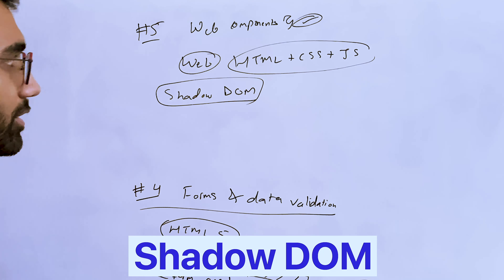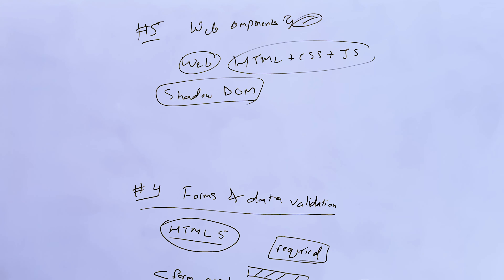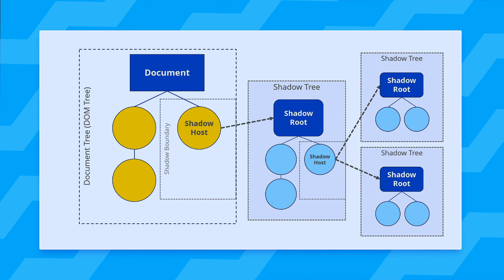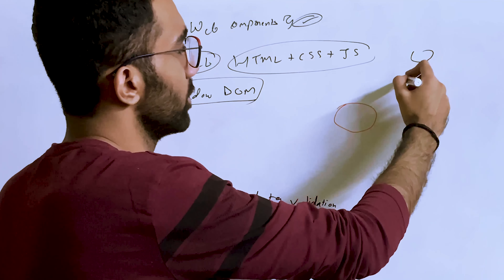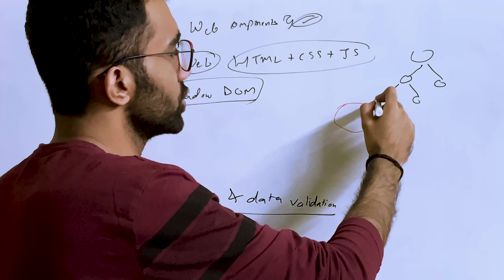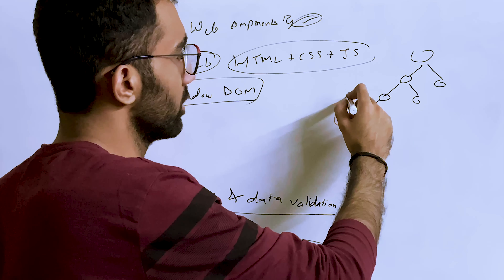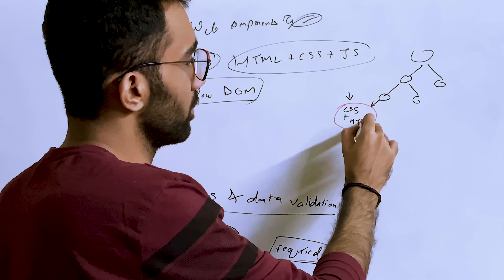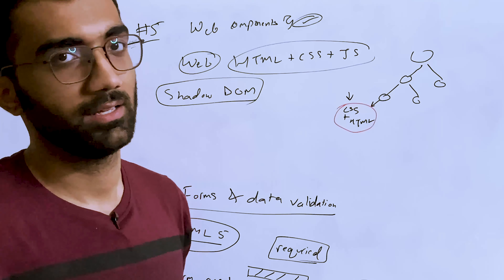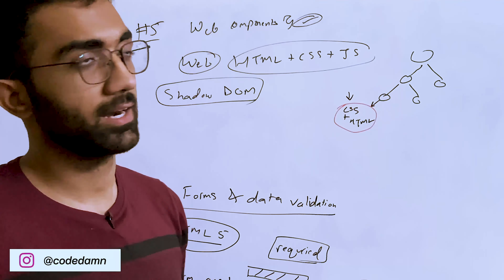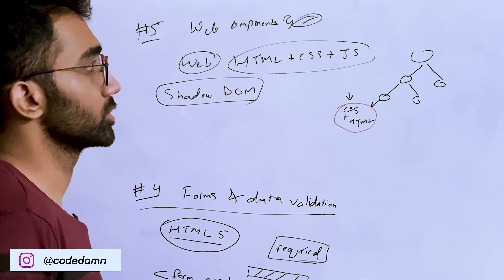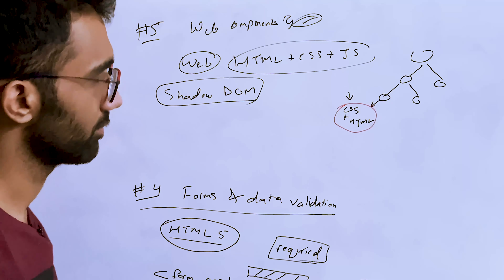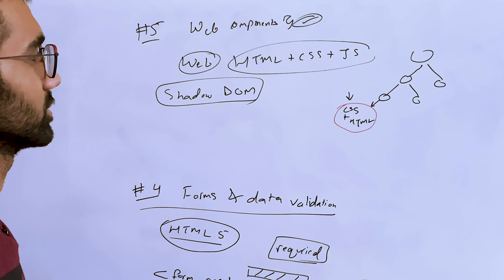Web components use Shadow DOM, which we briefly discussed in point three. Shadow DOM is essentially a private part of a DOM tree — the CSS you write for your HTML in that region is scoped, just like CSS modules in React. But it's more powerful and has more features than that.